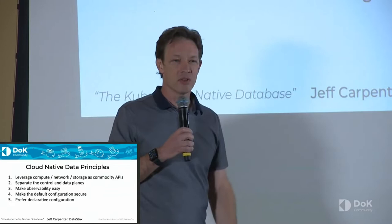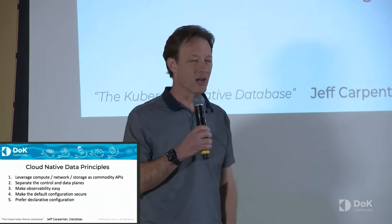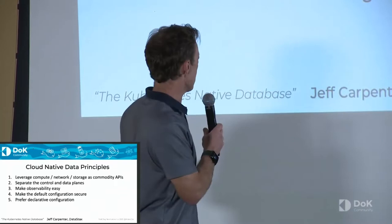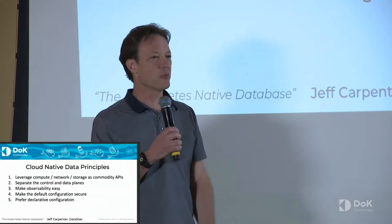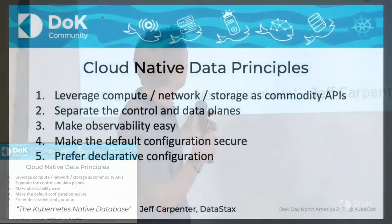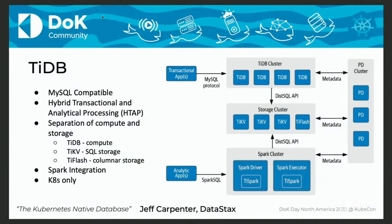Number four: make the default configuration secure. No default passwords — we've moved past that. In the Kubernetes and container-based world, you don't have to leave all ports open by default. This is a principle of least privilege applied to data infrastructure. Number five: prefer declarative configuration whenever possible. For those familiar with how Kubernetes works, this is music to our ears — it's the language we speak. With those principles in mind, let's look at a couple of databases to see if we can define what it means to be Kubernetes native.